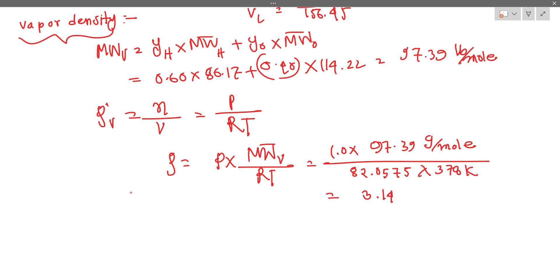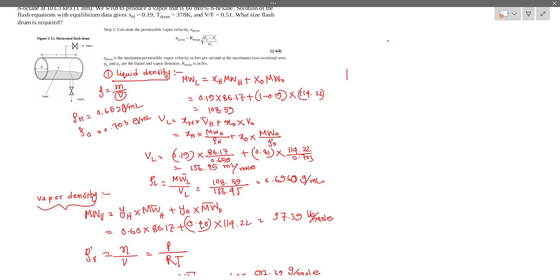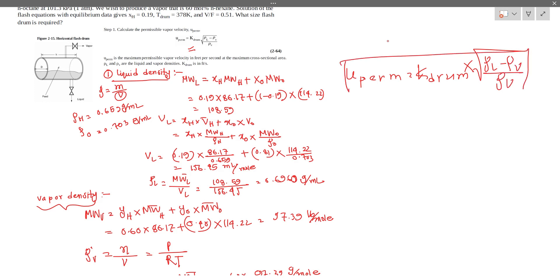The result is approximately 3.14 times 10 to the negative 3 grams per milliliter for rho V. Now we have both rho L and rho V, and we can proceed to calculate the permissible vapor velocity using the K-drum expression.